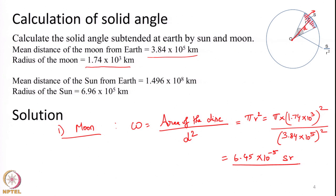After calculating, we get a value of 6.45×10⁻⁵ steradians. The unit of solid angle is steradian, whereas the unit of plane angle is radians. The moon subtends an extremely small solid angle — compare it with a full sphere which has a total solid angle of 4π steradians, analogous to how a circle has 2π radians total.